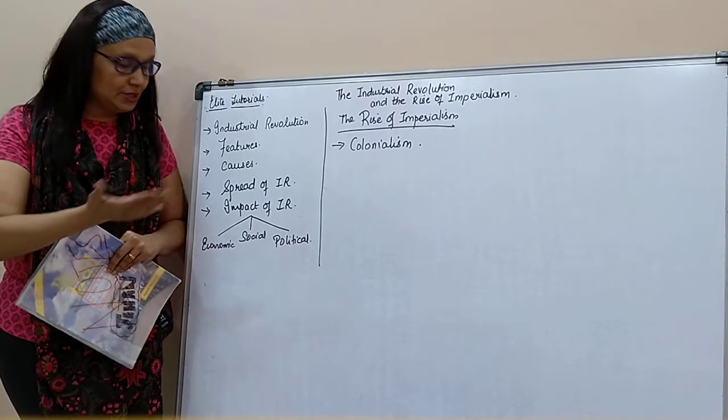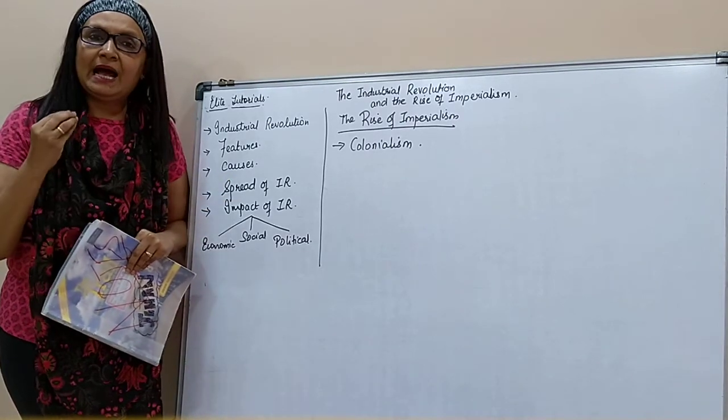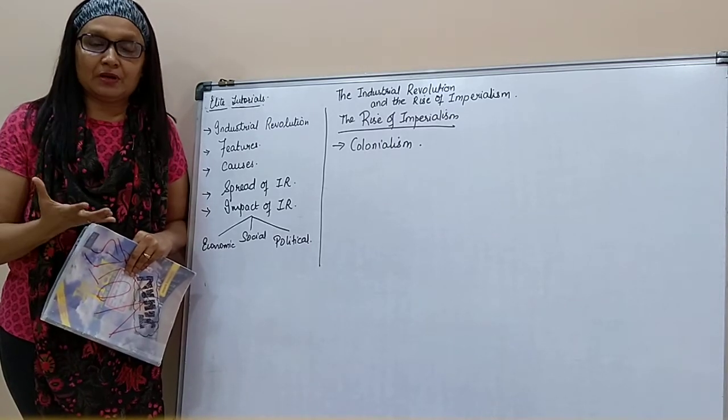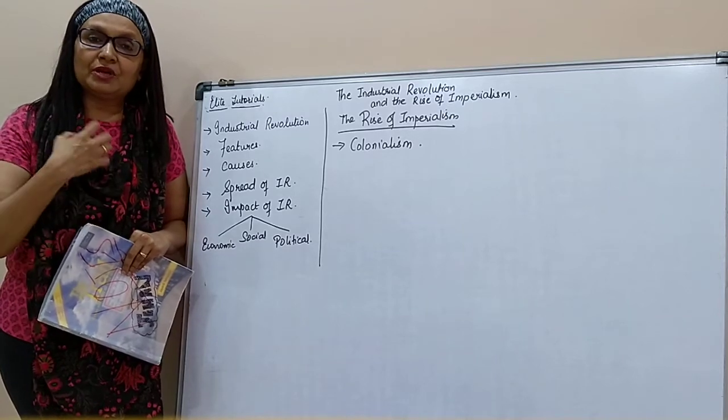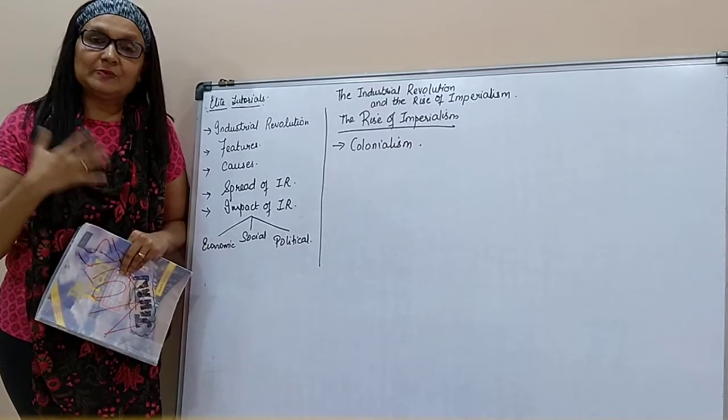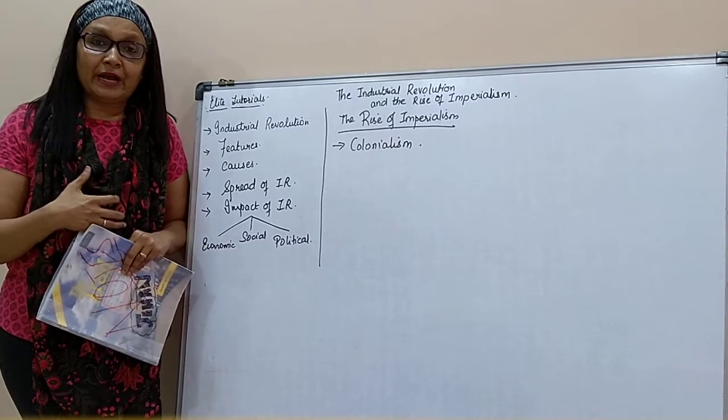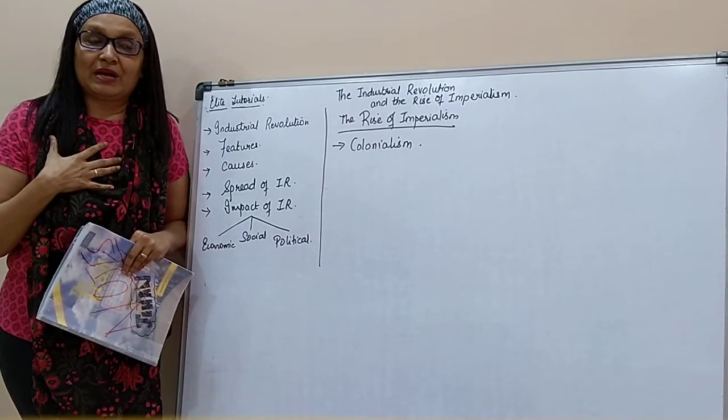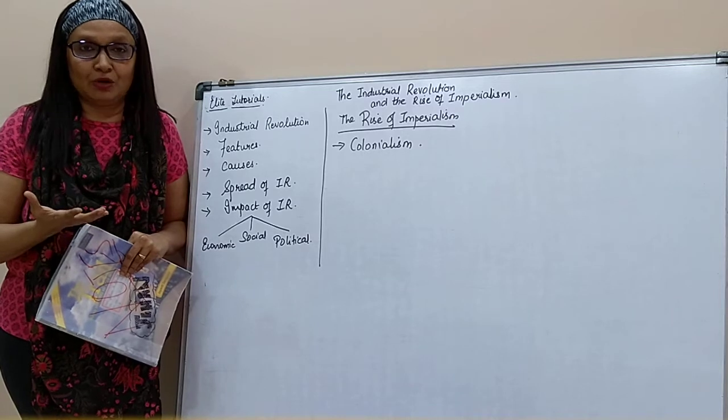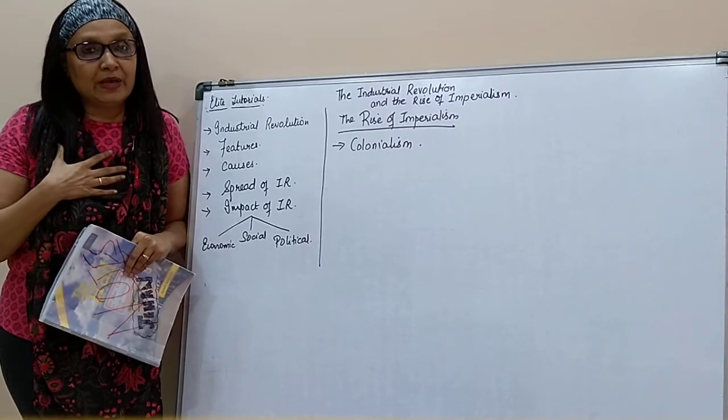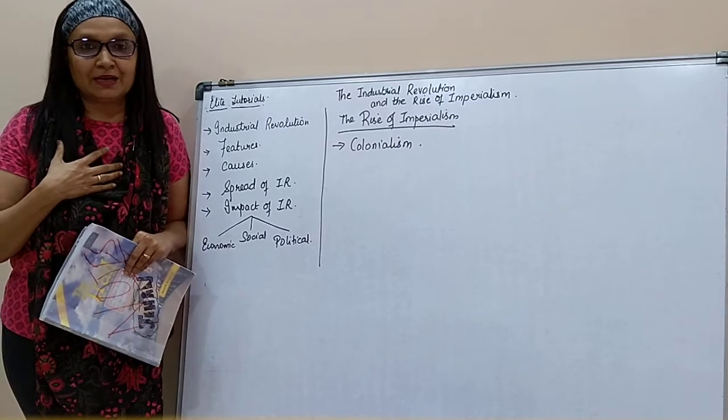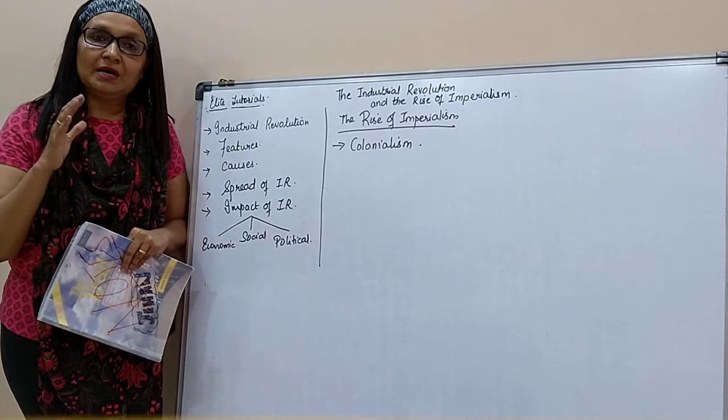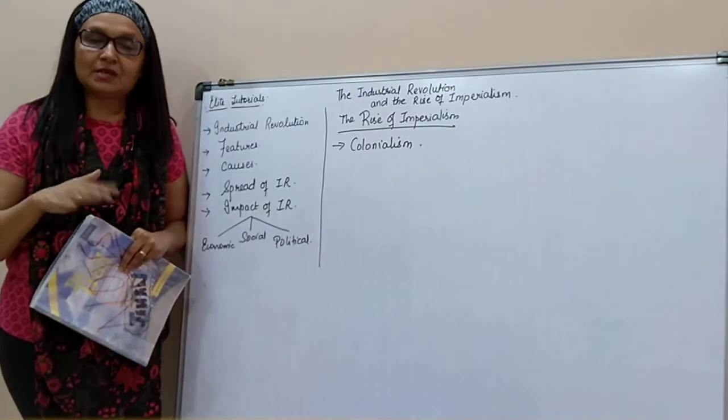This chapter we will be basically doing what is the meaning of Industrial Revolution, what were its features, causes, its spread, the impact economically, socially and politically. And because of Industrial Revolution, a new era takes place called Imperialism. Imperialism is when one country rules over another country.